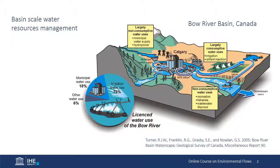You've already learned about the Murray-Darling Basin Authority. Other prominent examples include the Mekong River Commission, the International Commission for the Protection of the Danube River, and the Zambezi Watercourse Commission. The image on the slide shows a schematic of the main features and water users of the Bow River in Canada. The Bow River Basin Council was established in 1992 and is similar to many smaller and more local councils.